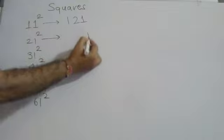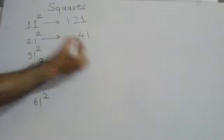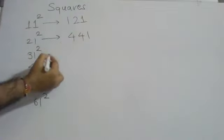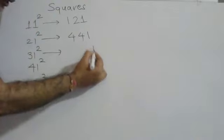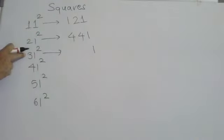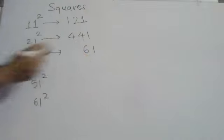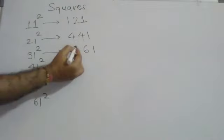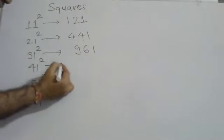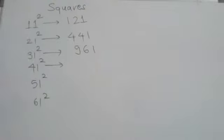Again, 21 square - write down one, double of two is four, square of two is four. So 21 square equals 441. Same with 31 - write down one, double of three is six, square of three is nine. So 31 square equals 961.